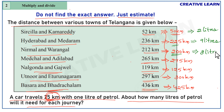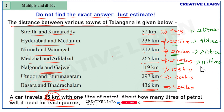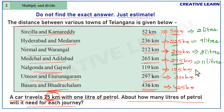To travel from Nirmal to Warangal: 200 kilometers means 25 eights are 200, so 8 liters. Next, Medchal to Adilabad: 275 kilometers — 225 kilometers needs 9 liters, plus an extra 50 kilometers needs 2 more liters, so that is 11 liters. For Nalgonda to Gajwel: 125 kilometers — 100 kilometers is 4 liters, and 25 kilometers is 1 more liter, so 5 liters.